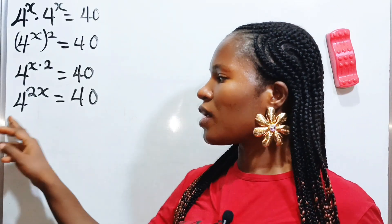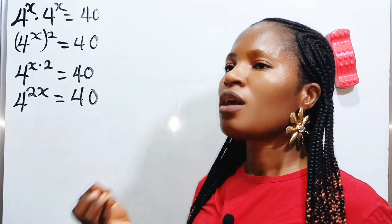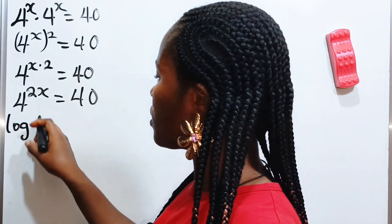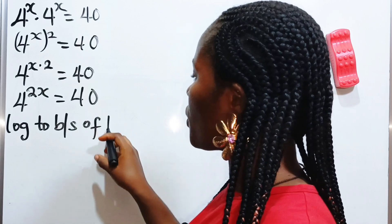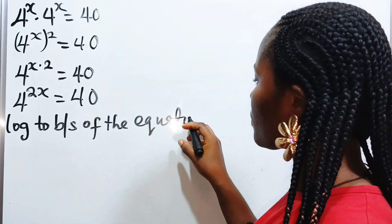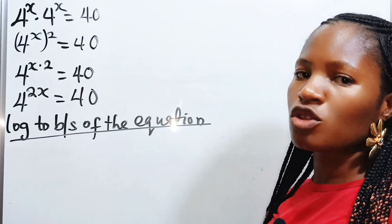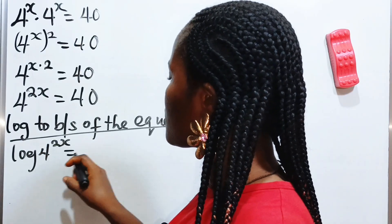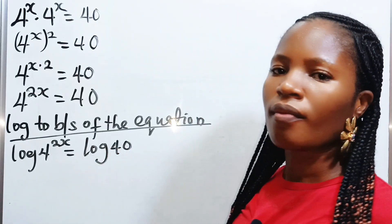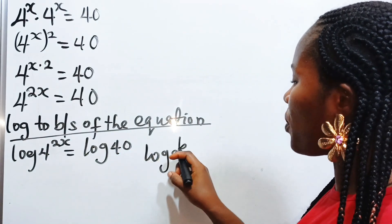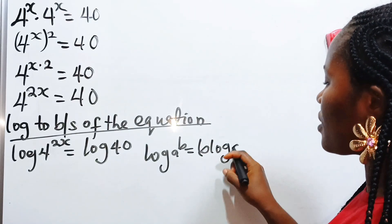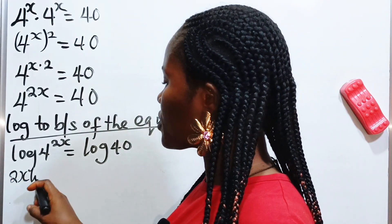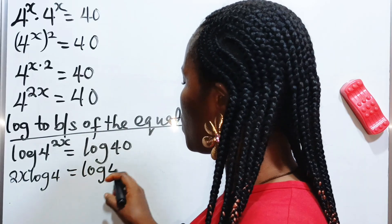Now, anytime you are solving an equation and your power happens to be your variable, all you need to do is introduce log to bring down the power. So let's introduce log to both sides of the equation. We have log 4 raised to the power of 2x is equal to log 40. Recall that log a raised to the power of b is equal to b multiplied by log a. Therefore, we write this as 2x multiplied by log 4 is equal to log 40.